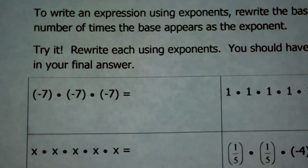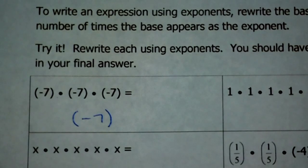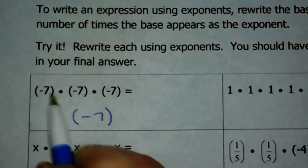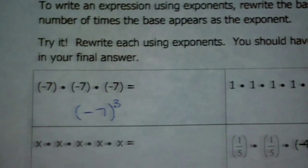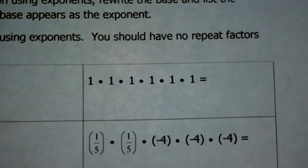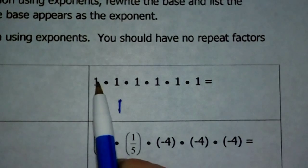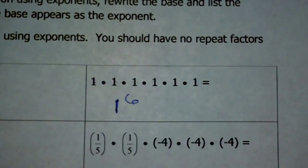Rewriting this again — I don't want you to evaluate it, I just want you to rewrite it. I'm going to rewrite this negative 7 with the parentheses, because that's how it starts. You've already learned that when you're raising a negative base to a power, those exponents make a difference. So the base is negative 7, the quantity of negative 7, and the number of times I have it is 3. In the next one, the base I'm repeatedly multiplying is 1, and the number of 1's I have is 1, 2, 3, 4, 5, 6 — so that is the same as 1 to the 6th power.